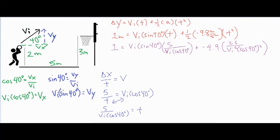Looking at this setup, it appears complicated because of the trig functions and squared values, but remember trig functions are just numbers — like sine of 40 degrees and cosine of 40 degrees — mostly numbers we don't know off the top of our head. What we can do is cancel out the vi, because it's vi divided by vi, and then sine of 40 times 5 divided by cosine of 40 gives us 4.2.